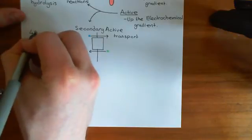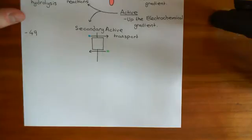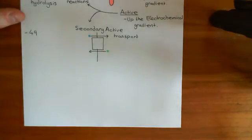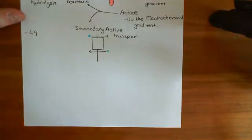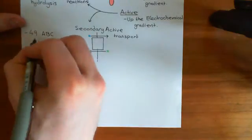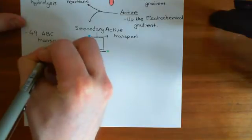The 49 different ABC transporters are going to move molecules either into or out of the cell — they will either be importers or exporters. When they move molecules into or out of the cell, they will hydrolyze ATP. Generally, it's two molecules of ATP hydrolyzed for every one molecule of solute moved. They move all sorts of different solutes, for instance amino acids and proteins.